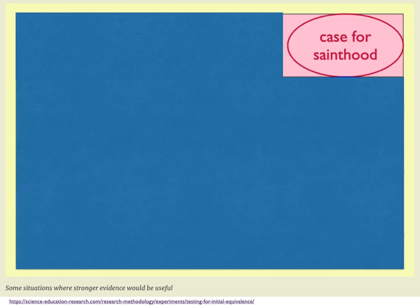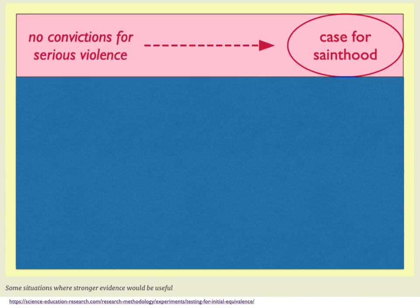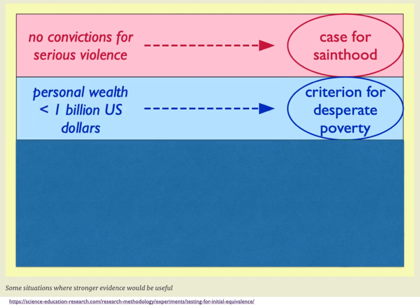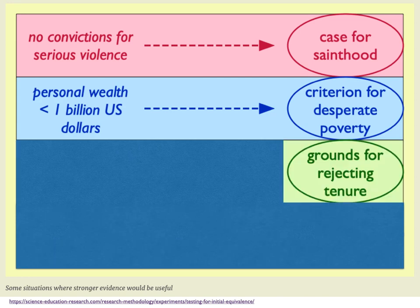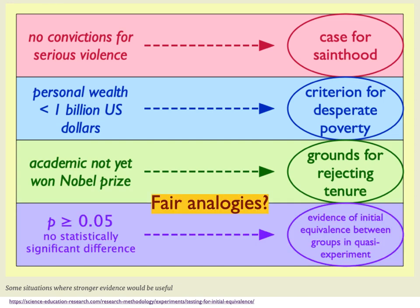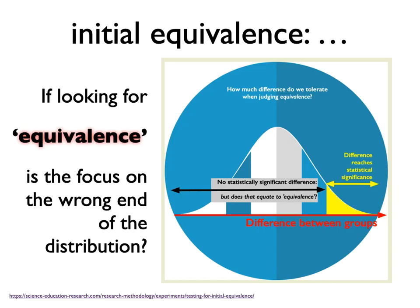Imagine you were looking for a test to decide if someone should be considered a saint — how high would you set the bar? What if you wanted to identify those who should be considered in poverty? Certainly not having a great deal of money would be a relevant criterion, but perhaps not quite exclusive enough. Maybe you were on a committee considering rejecting the permanent reappointment of a colleague on probation as their research record was not strong enough, but you should not have unreasonable expectations. I think these are similar situations in the sense that the criteria being adopted are certainly relevant and perhaps necessarily apply, but are by no means sufficient. In a sense we're looking at the wrong end of the distribution — we should be asking how probable we need measured differences to be, not simply excluding the most improbable.